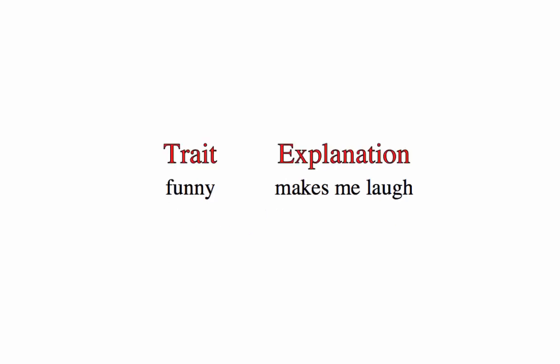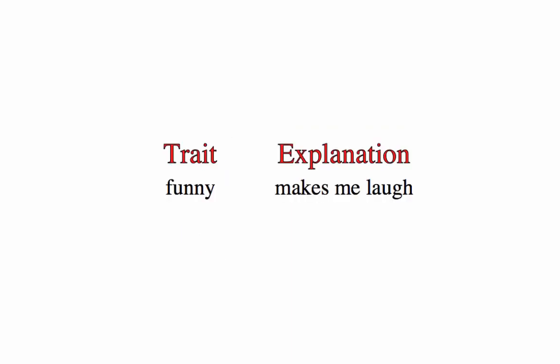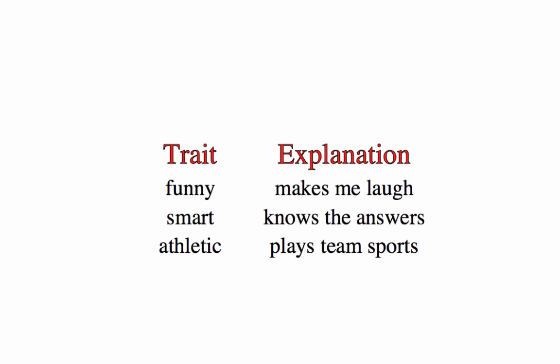An explanation is saying the same thing but using different words. My brother is funny — he makes me laugh a lot. Everyone can see that my brother has brown hair, but how do they know he is funny? I describe my brother by saying he is funny and then talk about the behavior that explains why I think so. My mom is smart — she knows all the answers for my homework. My sister is athletic — she plays on lots of sports teams. Traits are a way to draw a real-life picture using explanations to make your stories better.